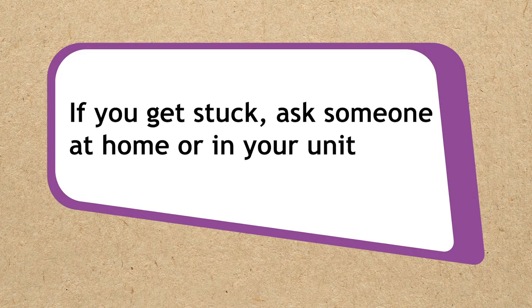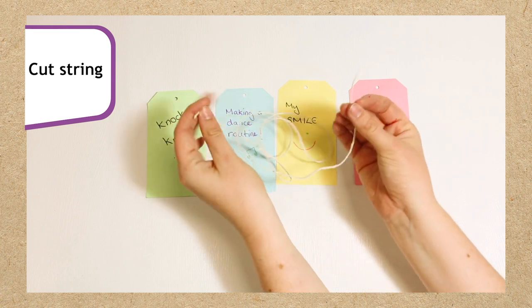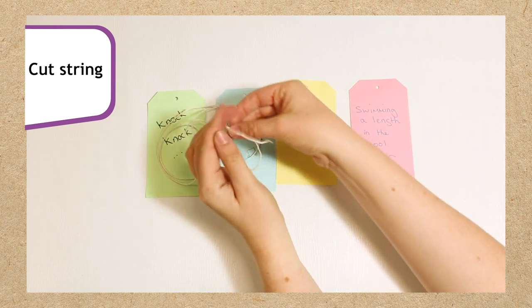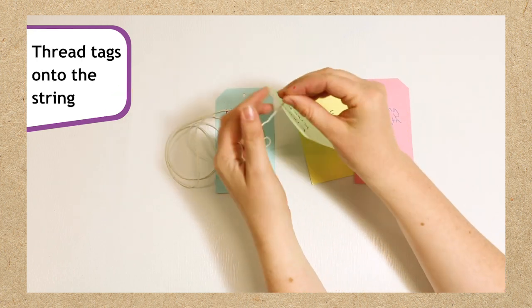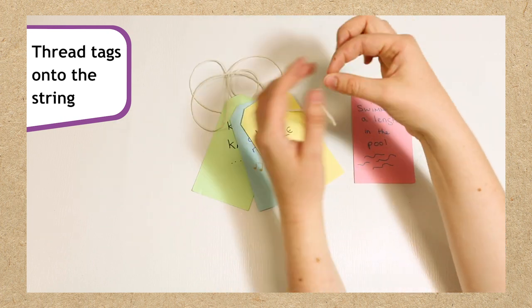If you get stuck and can't think of anything, you can ask someone at home or in your unit. Now cut a length of the wool or string big enough to fit around your waist. This is your confident superhero tool belt. Thread your gift tags onto the string. These are your confidence-building tags that are powering up your tool belt.